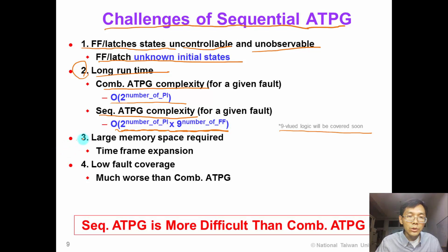The third issue is that sequential ATPG consumes large memory space. If we want to use time frame expansion, we need to duplicate or replicate the circuit into multiple copies which will occupy a lot of memory space.